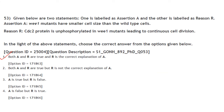Assertion: WEE1 mutants have smaller cell size than wild type. WEE1 is a nuclear protein that phosphorylates CDC2 at tyrosine 15, inactivating the CDC2-cyclin B complex and preventing entry into mitosis. In wee1 mutants, cells divide prematurely resulting in smaller cell size. Reason: CDC2 protein is unphosphorylated in wee1 mutants, leading to continuous cell division. Both A and R are true and R is the correct explanation of A.